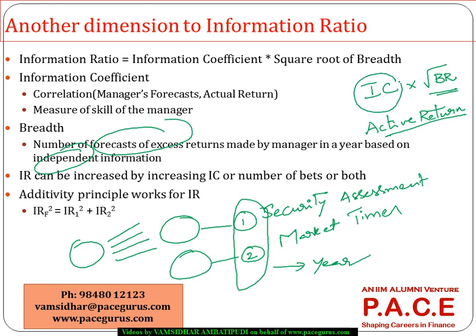The information coefficient is a measure of the skill of the manager. Whatever returns he has forecasted versus the actual returns — when you take the correlation between the two, that is the information coefficient. It can be positive or negative. The correlation between forecasted and actual returns indicates the information coefficient, and the multiplication of IC and the square root of breadth is the information ratio for a security selector manager.